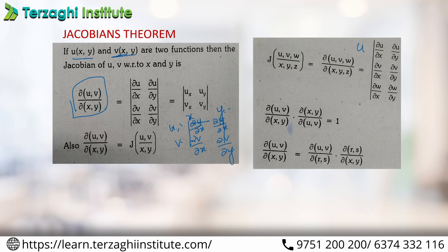For three variables u, v, w with respect to x, y, z: the Jacobian determinant is a 3×3 matrix with rows u, v, w and columns x, y, z — entries being dou u/dou x, dou u/dou y, dou u/dou z, dou v/dou x, dou v/dou y, dou v/dou z, dou w/dou x, dou w/dou y, dou w/dou z.